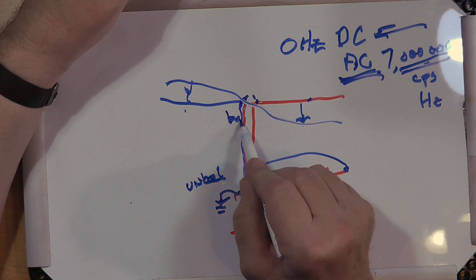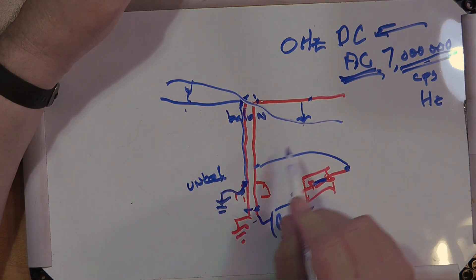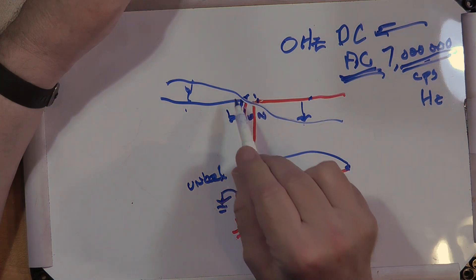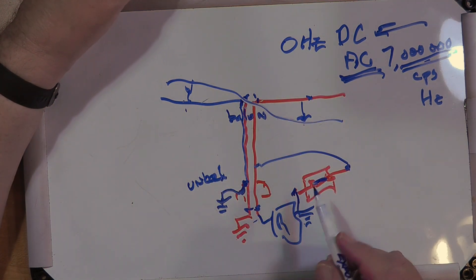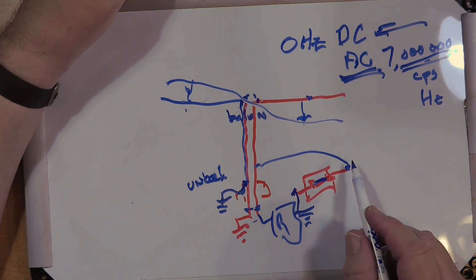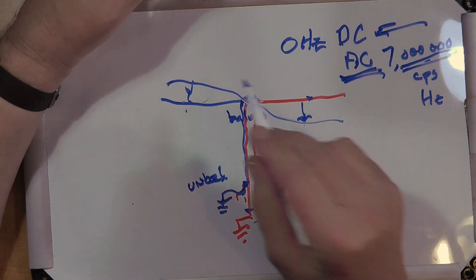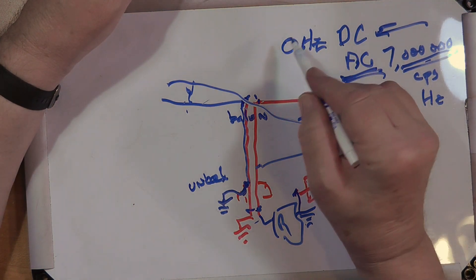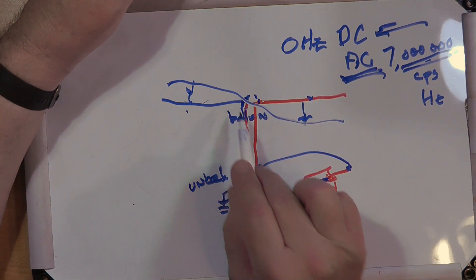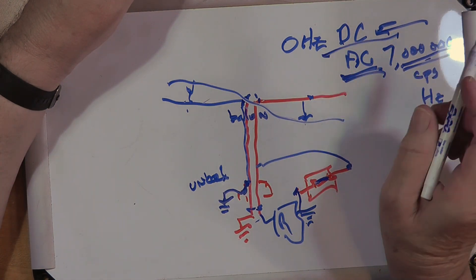Now you can also put a balun up here that just takes the unbalanced and converts it to balanced because a dipole is inherently a balanced antenna as is a Yagi, although it depends on the way you feed it.